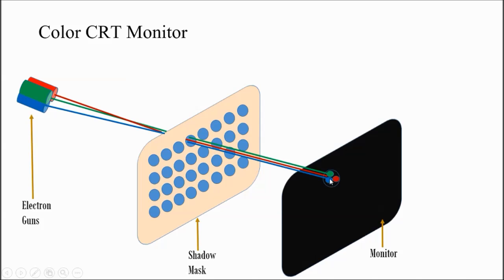There is a shadow mask on which there are holes which are related to the pixels on the monitor. So if you want to glow any one pixel, the beam should pass through the shadow mask and it will hit at that place. Based on the percentage of three colors perceived at that point, the resultant color will be perceived by the person or the viewer. This is the working of how the color CRT monitor works.